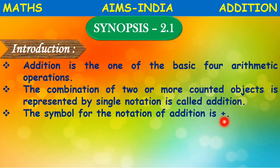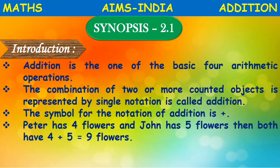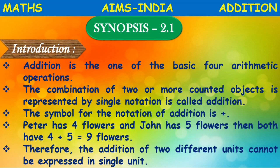The symbol used for the notation of addition is the plus sign. For example, Peter has four flowers and John has five flowers. Both have four plus five flowers total.